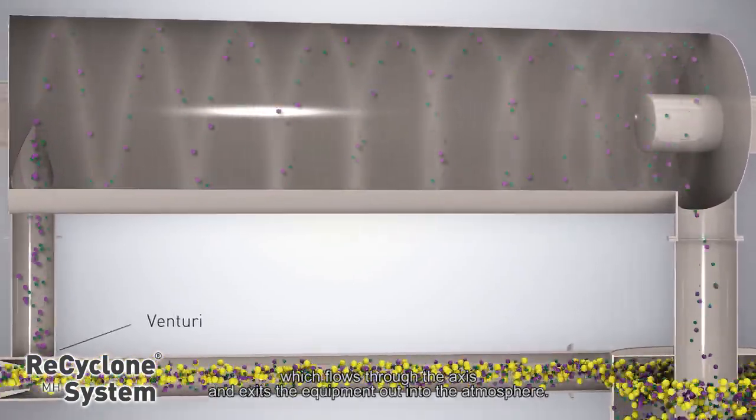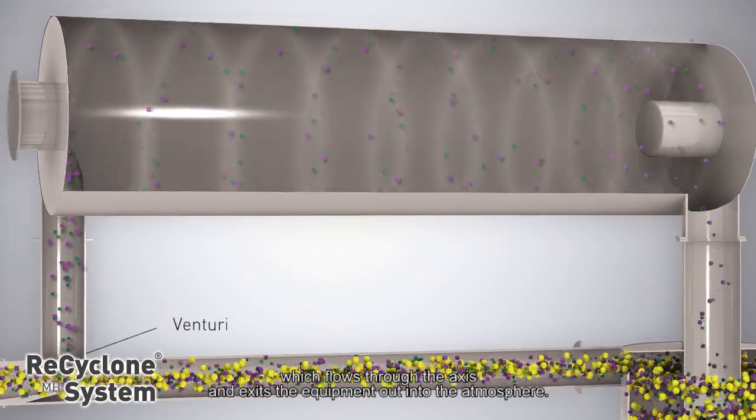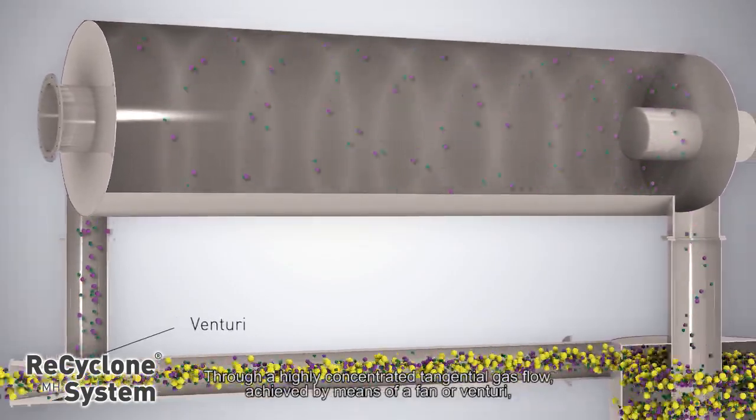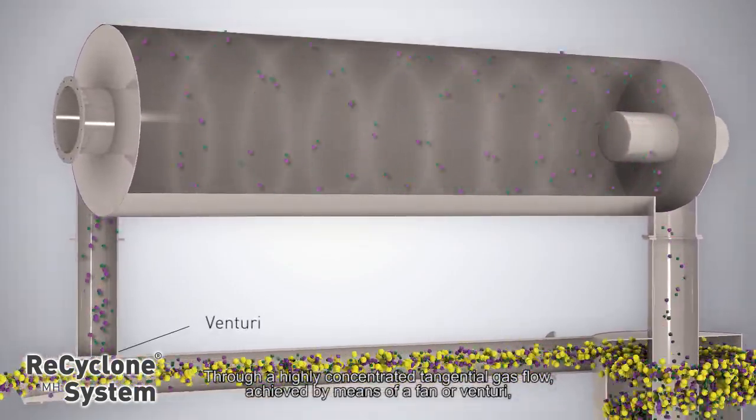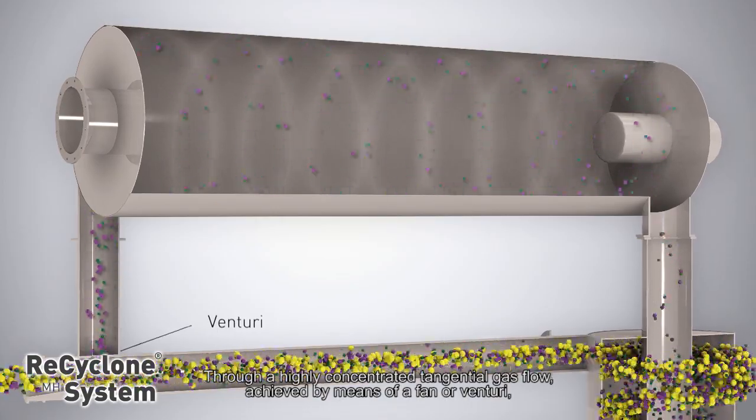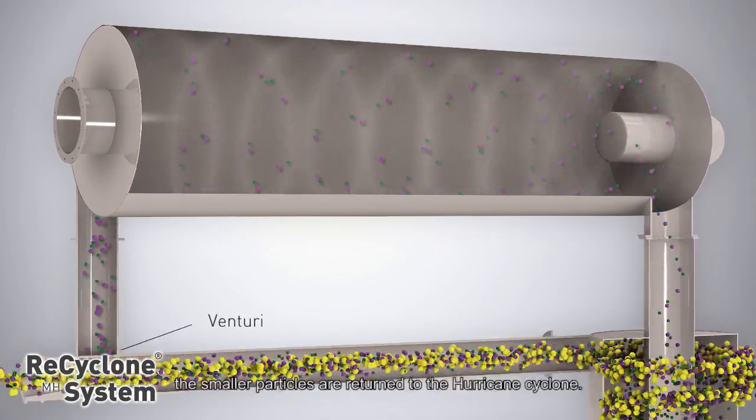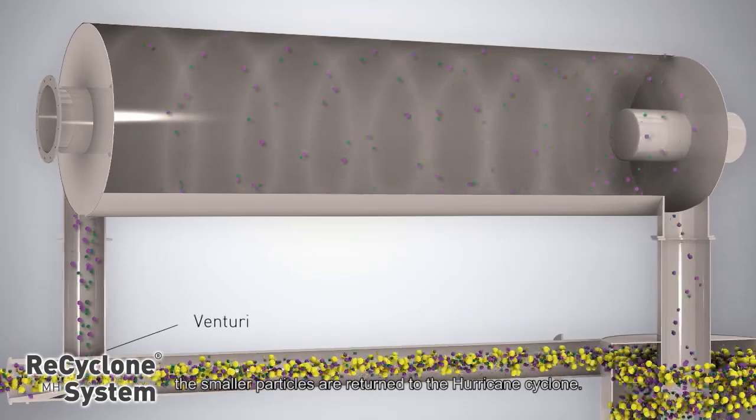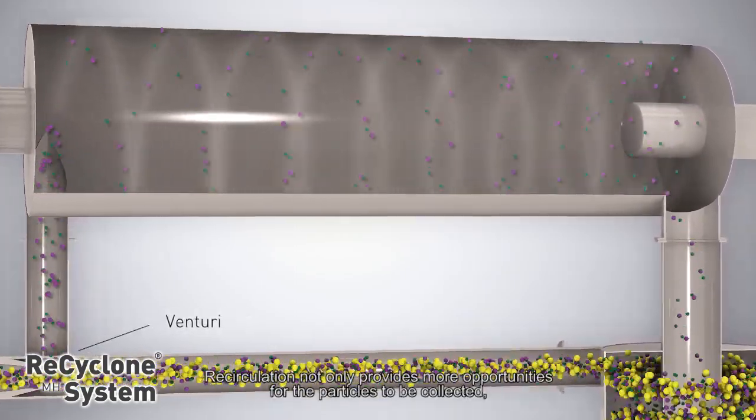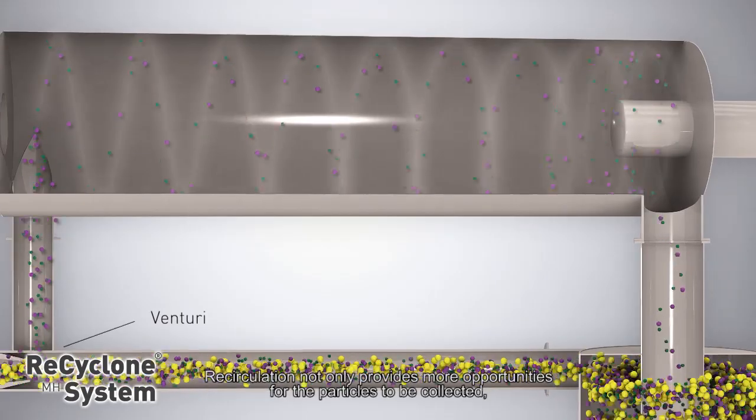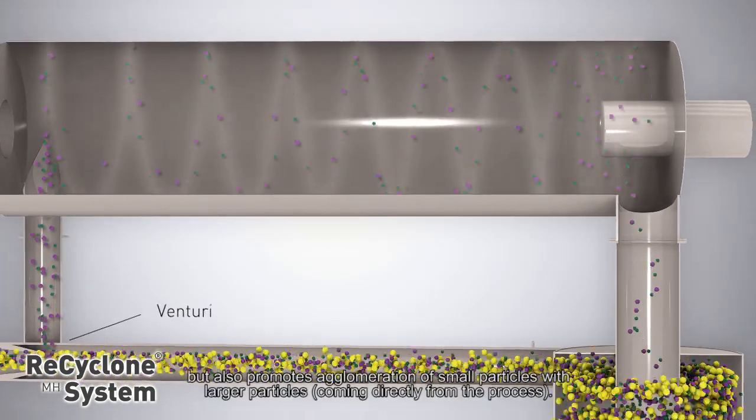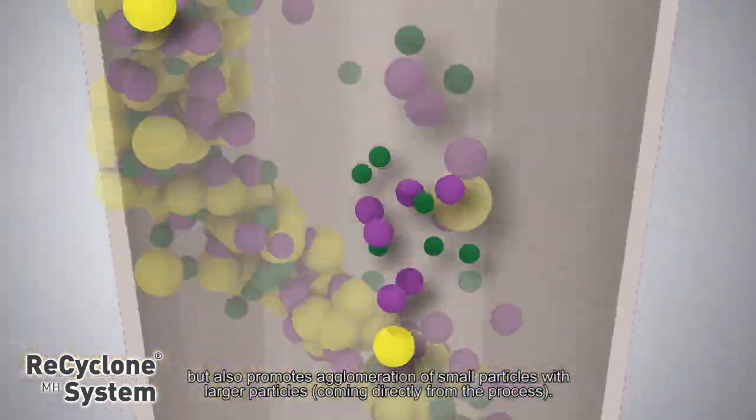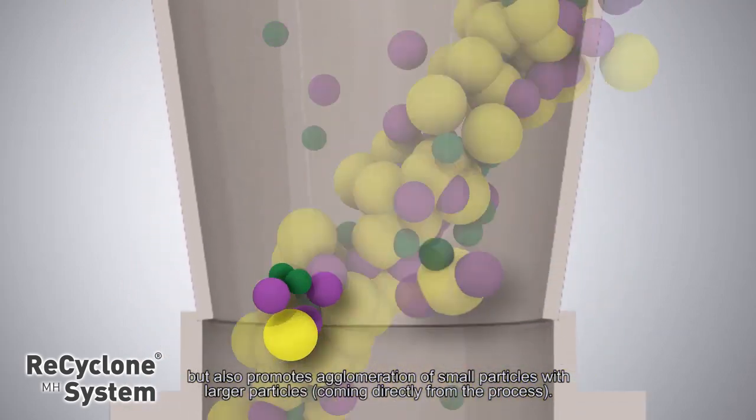Through a highly concentrated tangential gas flow, achieved by means of a fan or venturi, the smaller particles are returned to the Hurricane Cyclone. Recirculation not only provides more opportunities for the particles to be collected, but also promotes agglomeration of small particles with larger particles coming directly from the process.